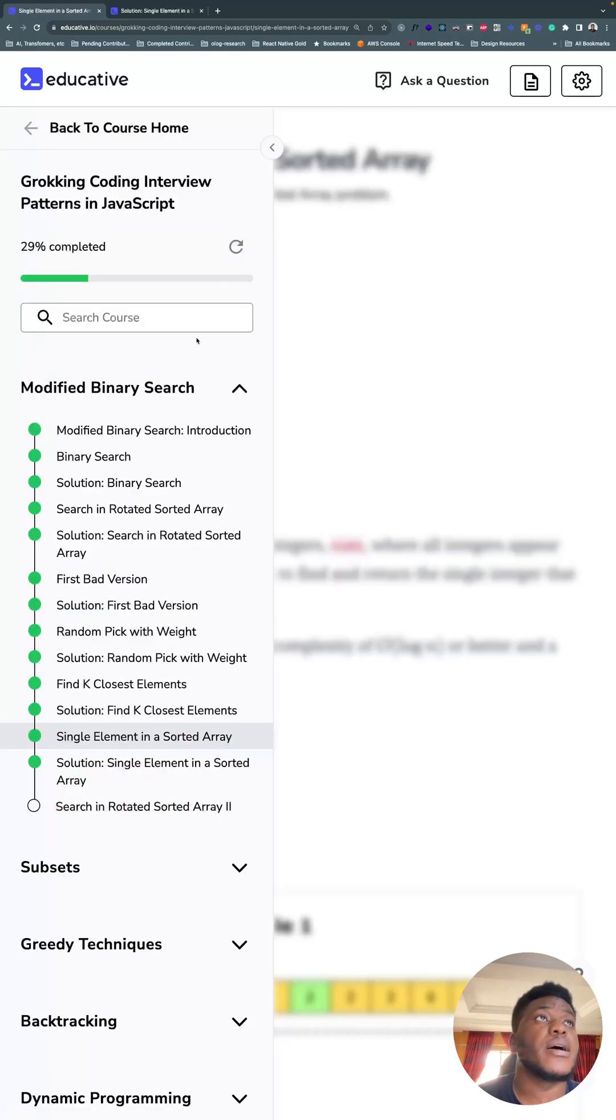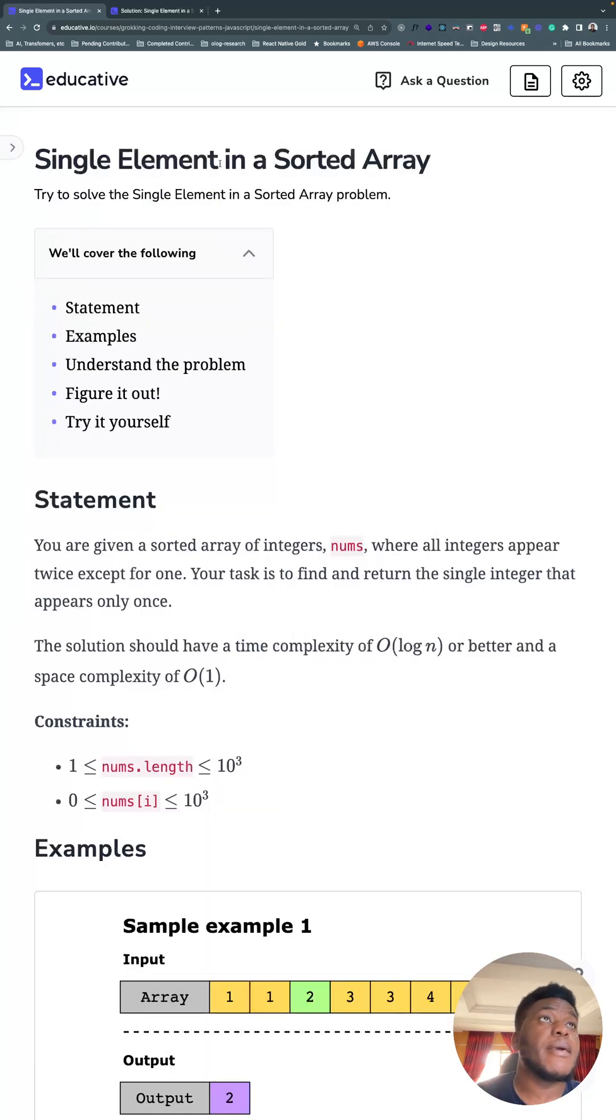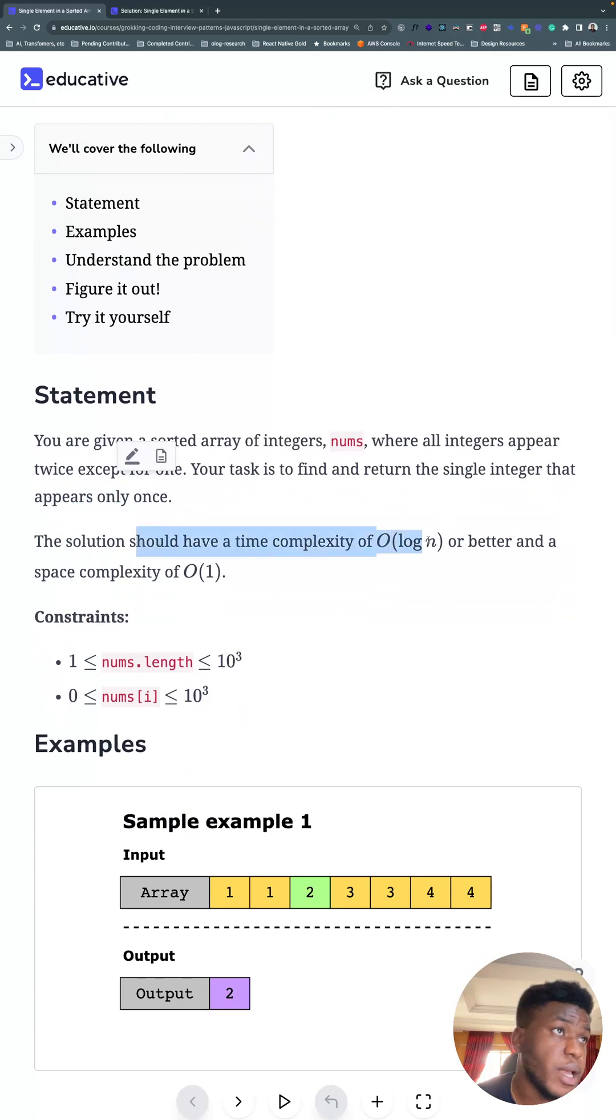Let's get to it. Statement: you have a sorted array of integers numbers where all integers appear twice except for one. Your task is to find and return the single integer that appears only once. The solution should have a time complexity of O(log n), which should trigger binary search thoughts once you see this, and a space complexity of O(1).